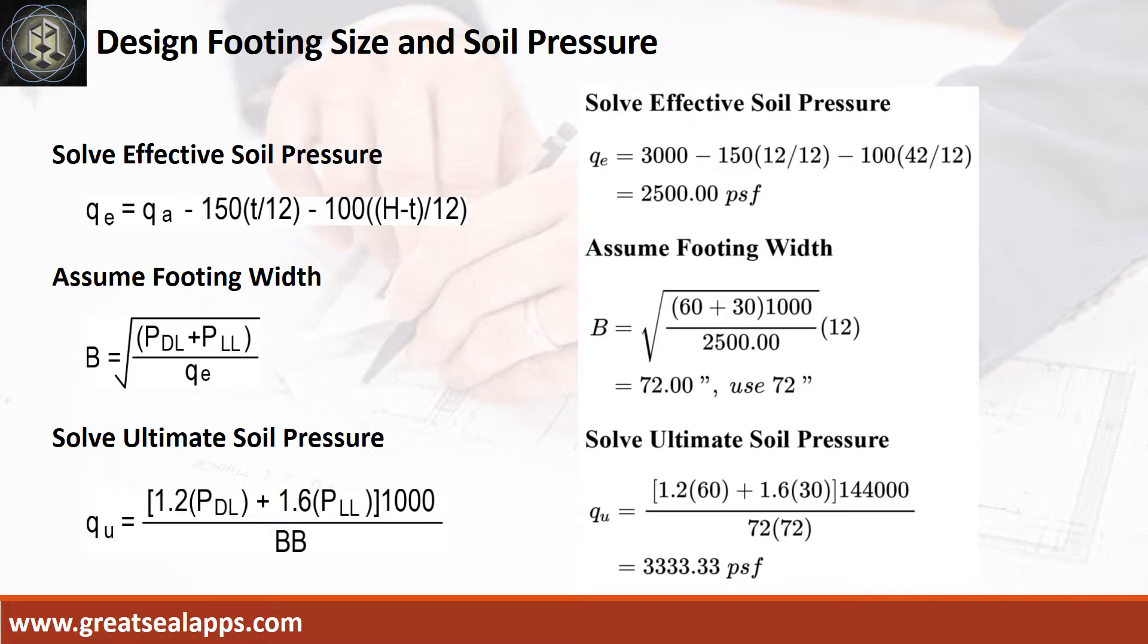Given actual dead load of 60 kips and actual live load of 30 kips, the assumed footing width is 72 inches, and the ultimate soil pressure is 3333.33 PSF.